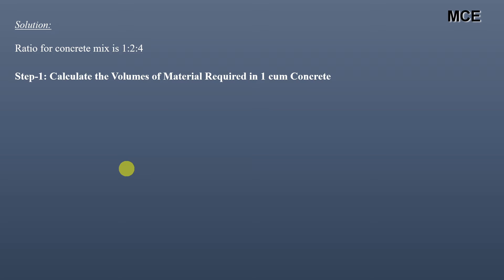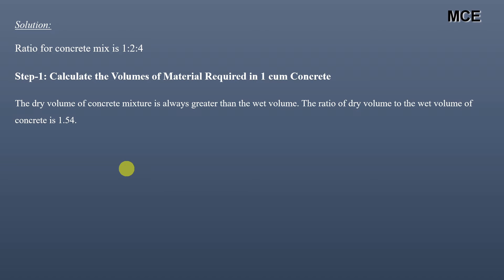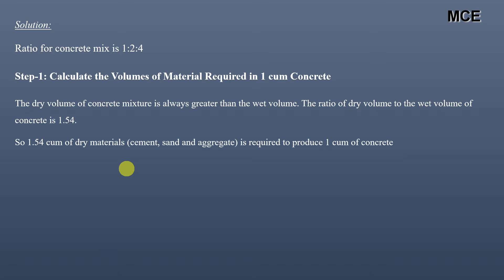The first thing we will do is find the volume of material required in one cubic meter of concrete — that is, for cement, sand, and aggregate. Always remember that the dry volume of concrete mixture is greater than the wet volume, and the ratio of dry volume to wet volume is 1.54.